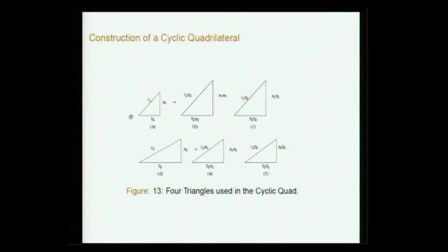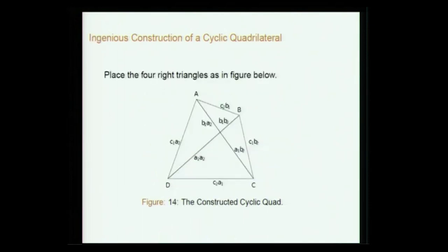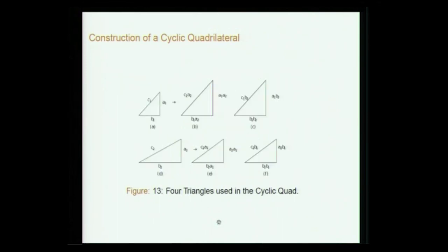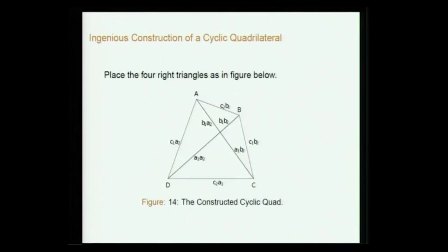Bhaskara II discusses this in detail in his Lilavati and gives the diagonals. What he does is multiply all the sides of the first triangle (c1, a1, b1) by the upright of the other triangle, and also by the side. This generates four triangles which are placed together to form the cyclic quadrilateral. One can see that the diagonals meet perpendicularly — so the two diagonals are intersecting at right angles. Brahmagupta gives only the sides, but this is how it can be constructed.